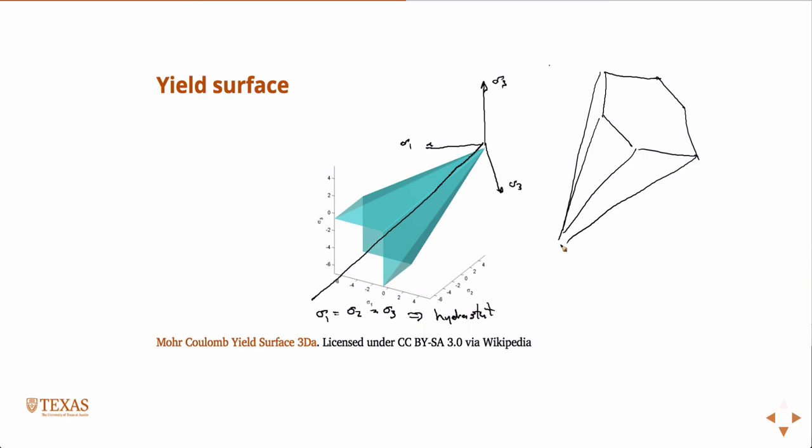Rocks typically don't have much tensile strength, so going into the tensile regime, as soon as you have any tension the rock will fail. The cone is open to infinity in the compressive direction, which implies that as I increase pressure indefinitely, the rock keeps getting stronger and stronger forever. But that's not really true — real rocks have pores, and if you squeeze them hard enough, you'll permanently squeeze the pores out of the material.